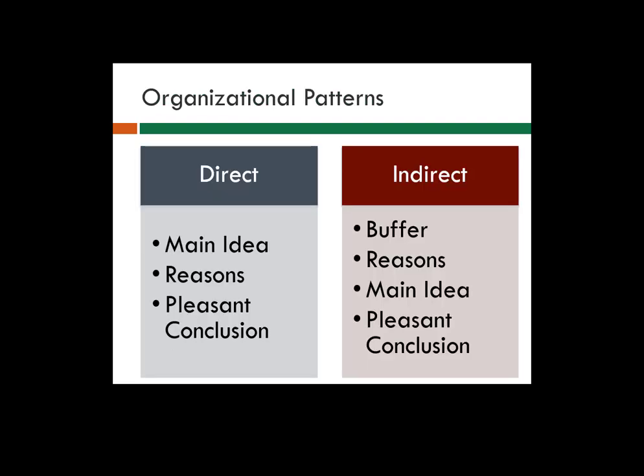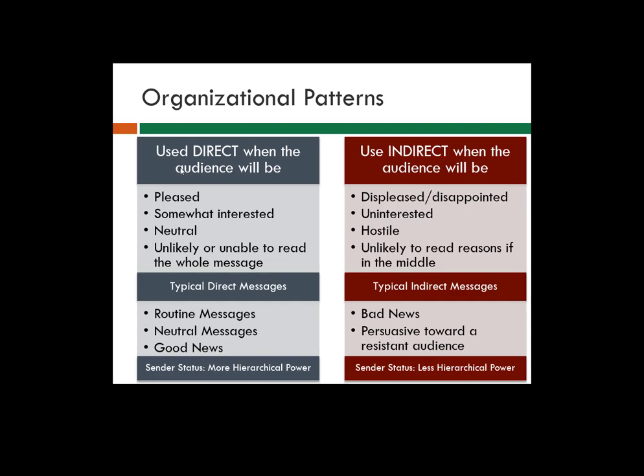There are two big organizational patterns that you'll want to learn: direct and indirect. We'll go through a few ways to remember these. The only way to apply these effectively is to apply what you learned in chapters one through four. You need to know your audience and your purpose, and then you can get to this point of thinking about organization. With direct and indirect, you'll need to understand the key differences, and that goes back to audience and purpose.